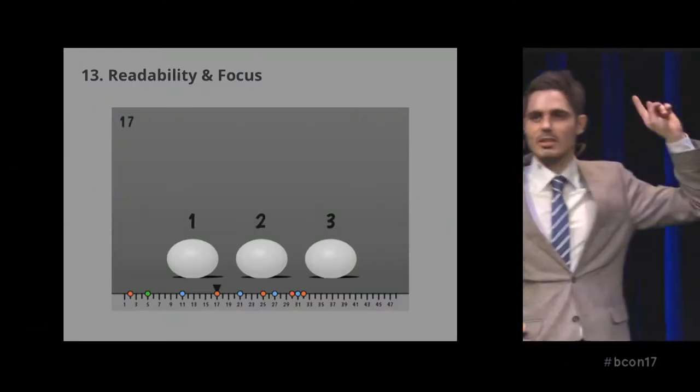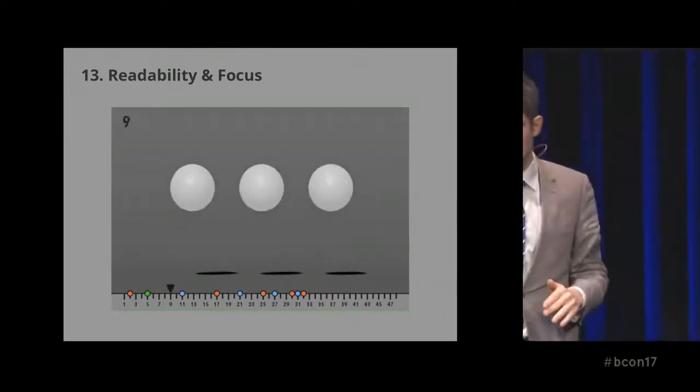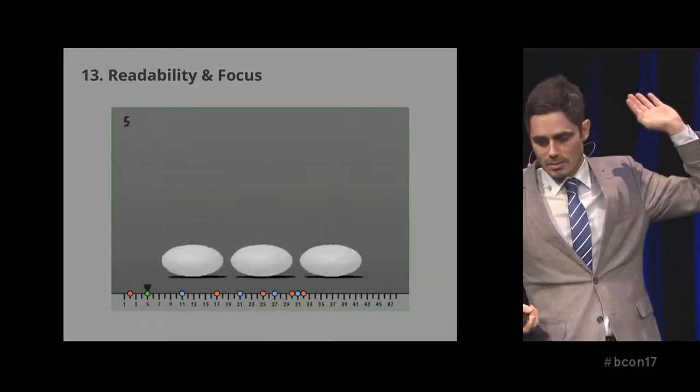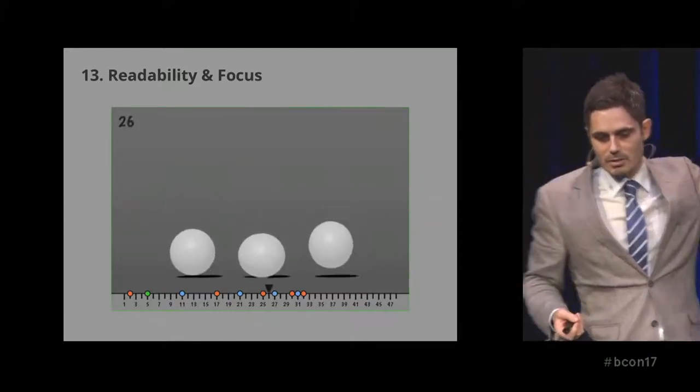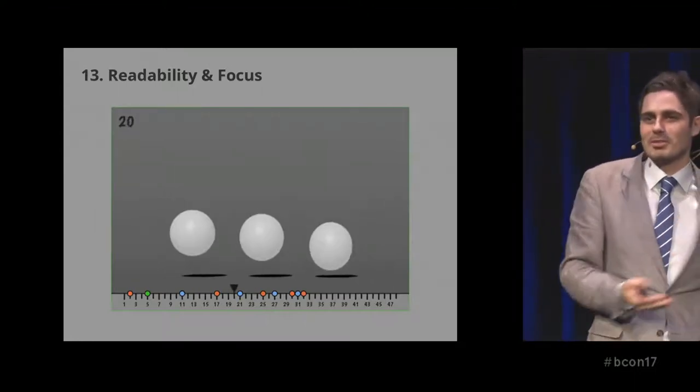Next topic: readability and focus. At 24 frames per second, if something's there for only one frame, viewers notice it but don't fully read it. It needs to be there for at least two frames — one twelfth of a second. Showing three bouncing balls: the first has no held extreme, the second holds the squashed pose for two frames, the third for three frames — you can see the difference. If you want to emphasize the downward squash, maybe you go with three frames. If you're pushing your world's plausibility too far, you may need to pull back.